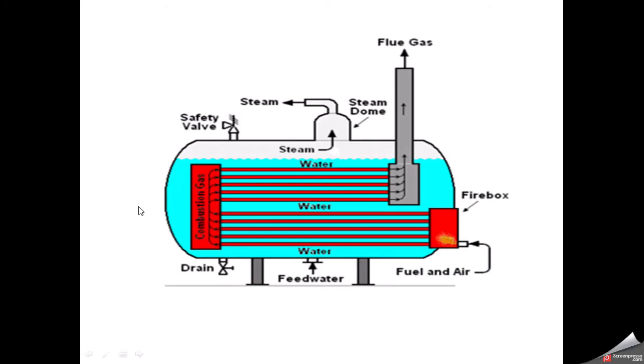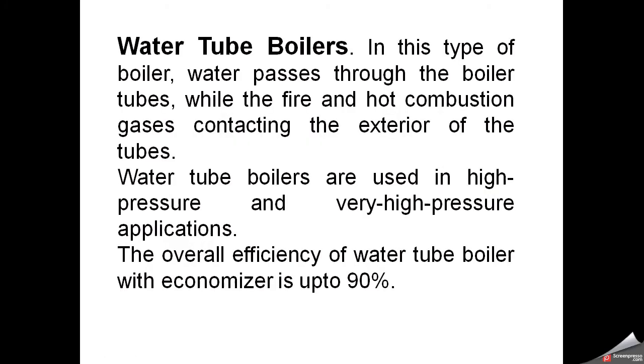The other type based on design is water tube boiler. In this type, water passes through the boiler tubes while fire and hot combustion pass contacting the exterior of the tubes. Water tube boilers are used in high pressure and very high pressure applications. The overall efficiency with economizer is up to 90%.